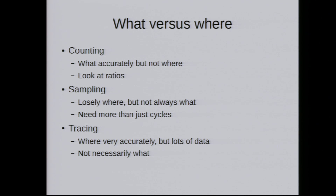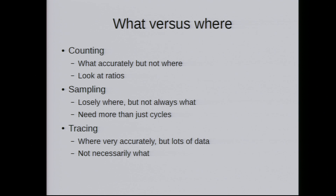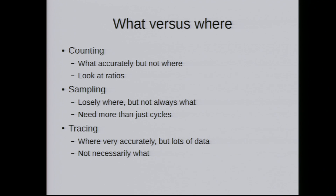When measuring CPU performance, there are three different techniques. First is counting: you add some instrumentation and count events. CPUs have tens to hundreds of different performance events they can count. Counting tells you what's happening but not necessarily where — you don't know where in your program the problem is. It's usually not useful to look at absolute numbers; typically you want ratios, like how many cycles per instruction or how many cache misses per instruction.